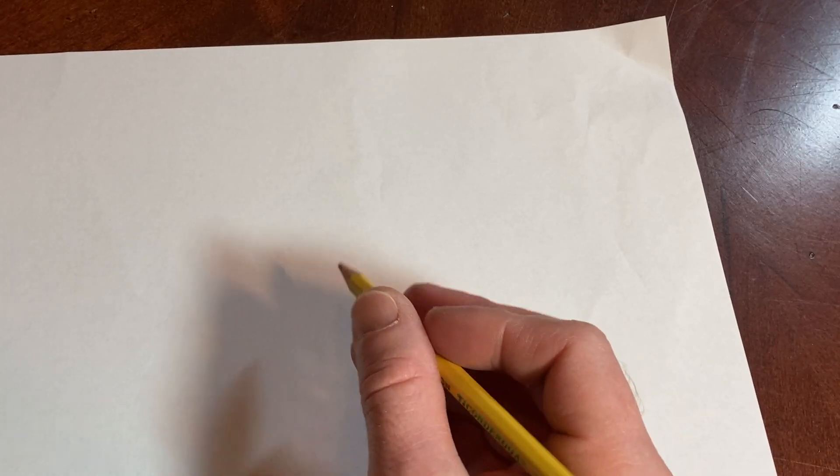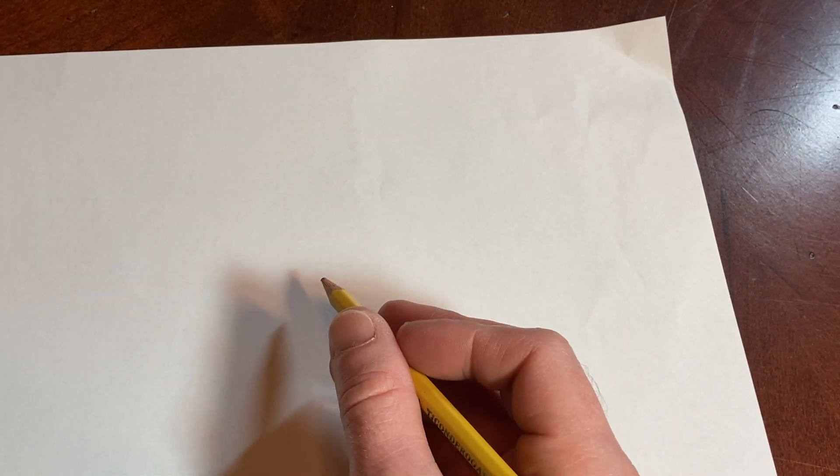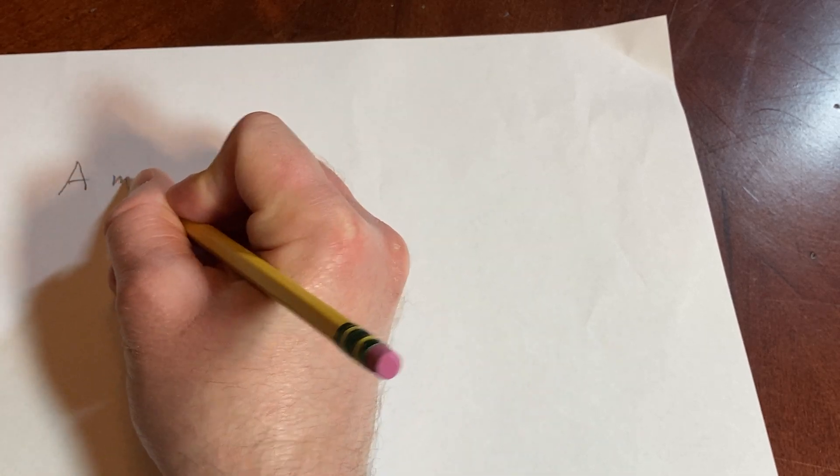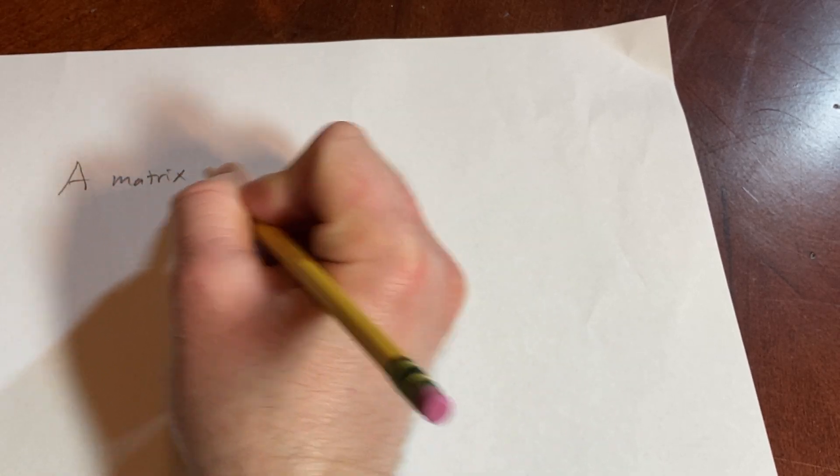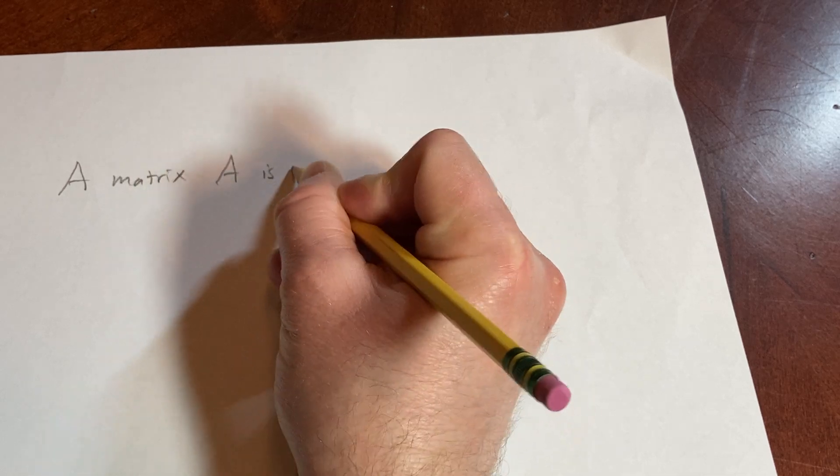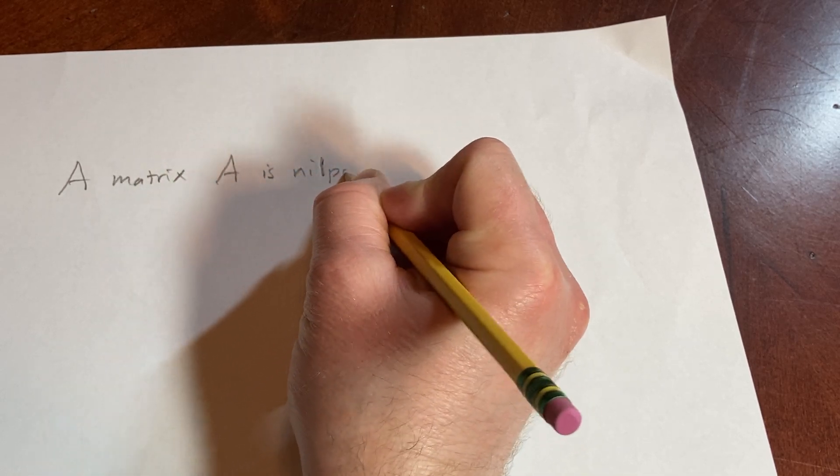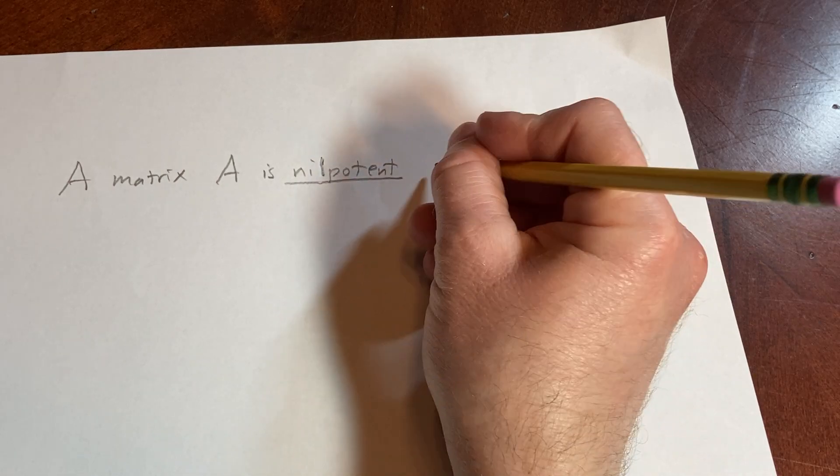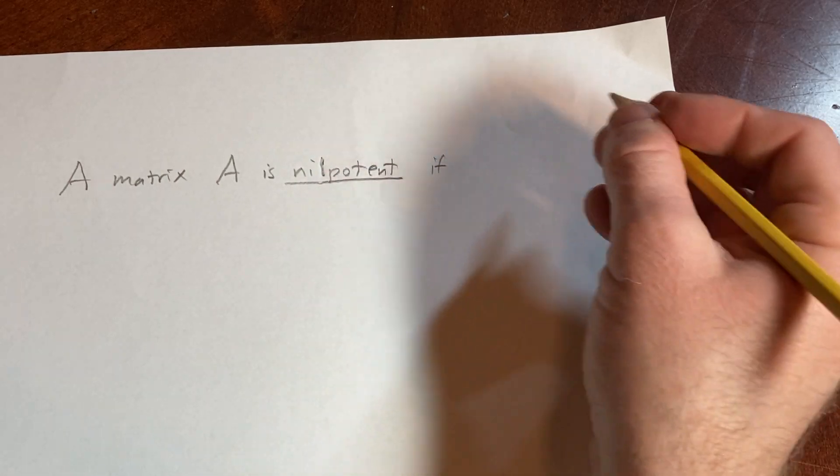Hi, in this video we are going to define nilpotent matrix. So let's go ahead and do that. We say a matrix A is nilpotent if there exists